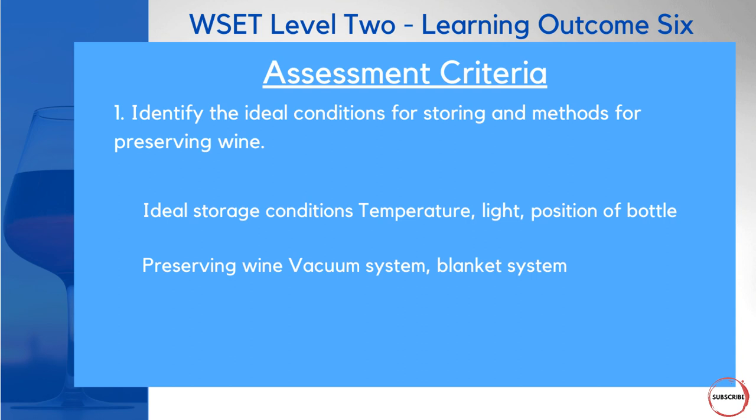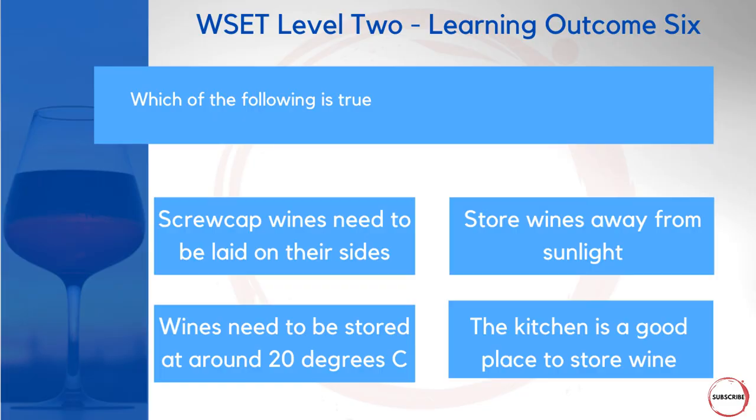As part of this assessment, you're going to be looking at the impact of temperature, light, and how to position a bottle, as well as systems that will be helpful in preserving wine, such as the vacuum system and the blanket system. As with all other videos in this series, I've got some questions here which are typical examples you might expect to see in an exam. So which of the following is true? Is it that screw cap wines need to be laid on their sides? That you need to store wines away from sunlight? That wines need to be stored at around 20 degrees centigrade? Or that the kitchen is a good place to store wine? One of these statements only can be correct.